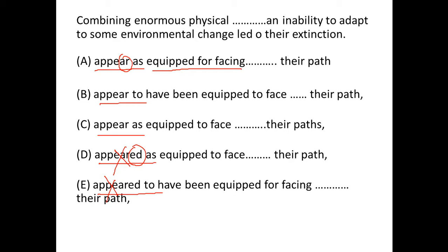Apart from that, in option A, 'equipped for facing' is wrong — 'equipped to face' is right. 'Equipped for doing something' is incorrect; it should be followed by 'to.' Furthermore, in option C it says 'their paths,' but we're talking about an obstacle which can be in the path — there could not be more than one path, so eliminate C.